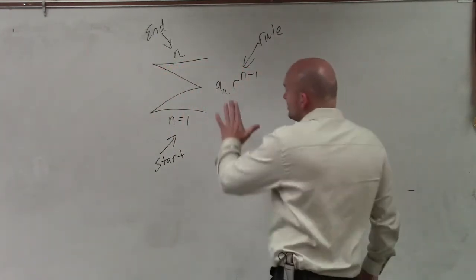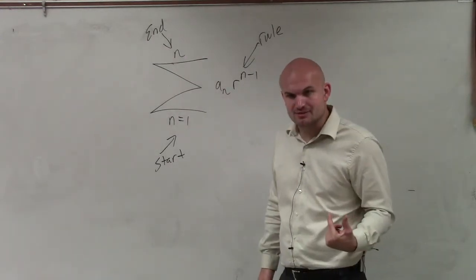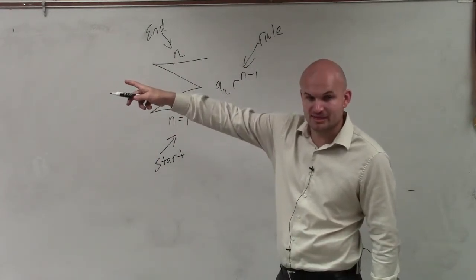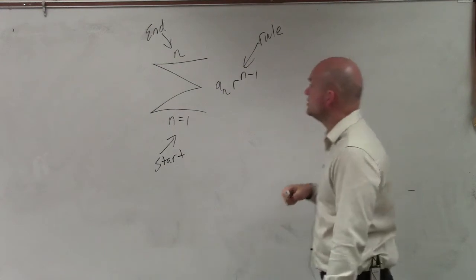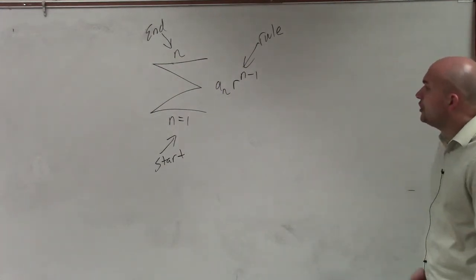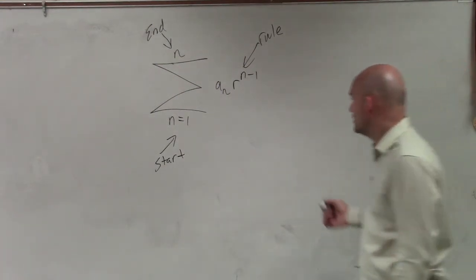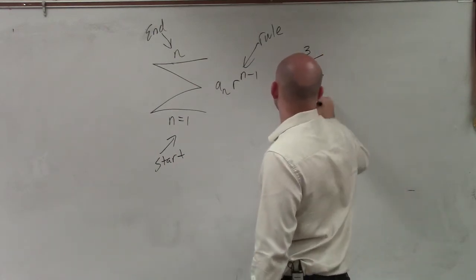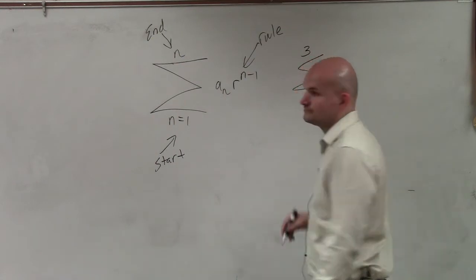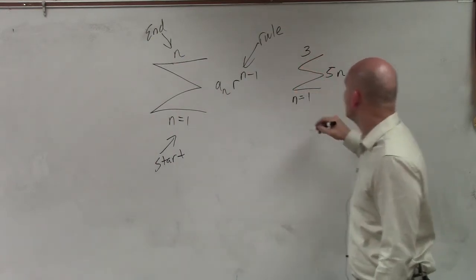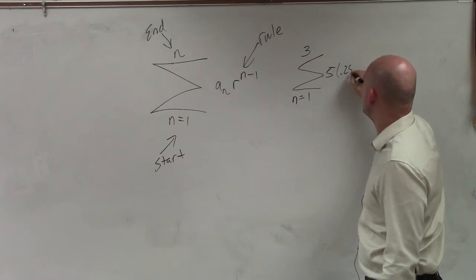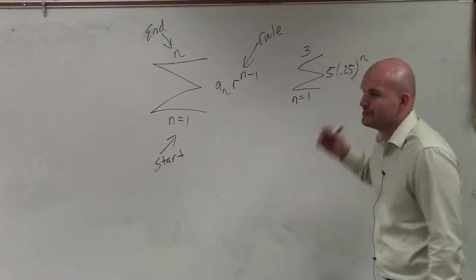Now you can see my rule is a geometric rule. Do you guys see that? It's the rule of the geometric. Before, we did the rule for the arithmetic — now it's geometric. So all you're simply going to be doing is adding up these values. Let's say I gave you something easy, like the sum from 1 to 3 of 5 times 0.25 raised to the n. Here's a geometric sequence.